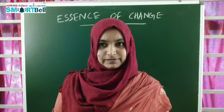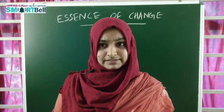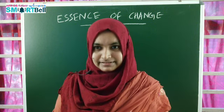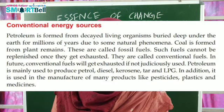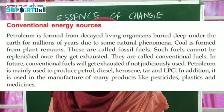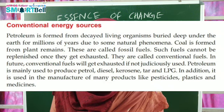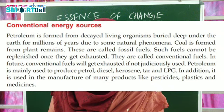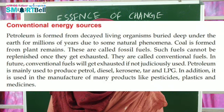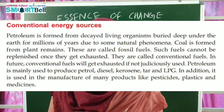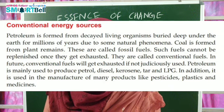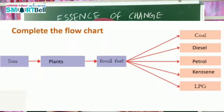What are fossil fuels? We studied conventional energy sources in fifth standard. Petroleum is formed from decayed living organisms buried deep under the earth for millions of years due to natural phenomena. Coal is formed from plant remains. These are called fossil fuels. Such fuels cannot be replenished once exhausted; they are called conventional fuels. In future, conventional fuels will get exhausted if not judiciously used. Petroleum is mainly used to produce petrol, diesel, kerosene, tar, and LPG.